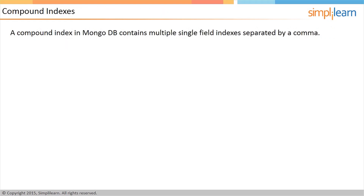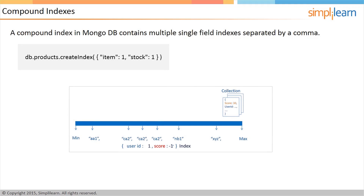MongoDB supports compound indexes to query multiple fields. A compound index contains multiple single-field indexes separated by a comma. The command shown on the screen is an example of a compound index on two fields. This diagram depicts a compound index for the fields userID and score. Documents are first organized by userID, and within each userID, scores are organized in descending order. Documents are first sorted by the item field value, and then within each item field value, they are further sorted by the stock field values.